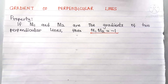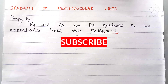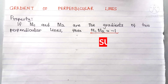Hi guys, in this video we're going to discuss the gradient of perpendicular lines, and we are going to prove a property which states that if m1 and m2 are the gradients of two perpendicular lines, then m1 times m2 is equal to minus one.